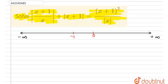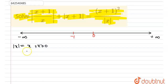Now, magnitude of x, or mod x — let's describe it first. That is equal to x if x is greater than or equal to 0, and equal to minus x if x is less than 0. So that is the definition of magnitude of x.